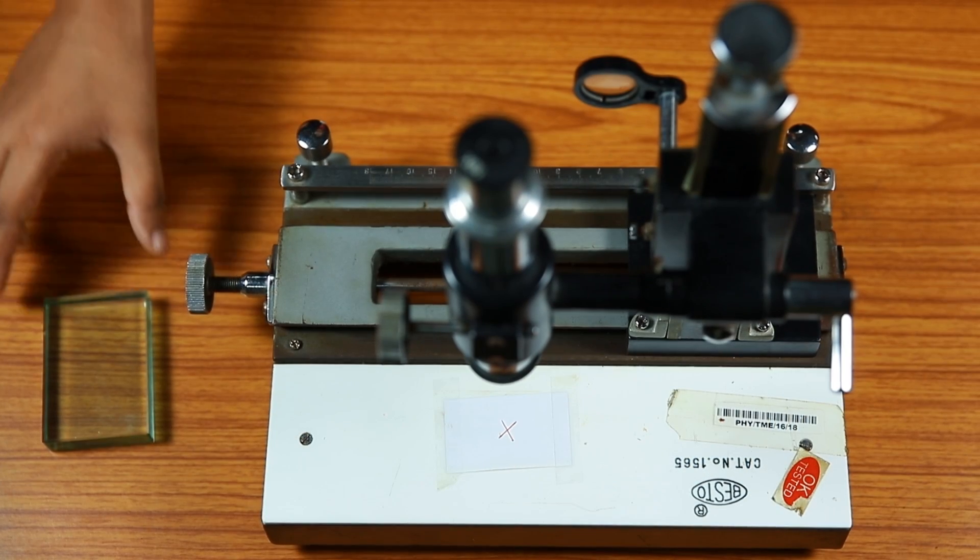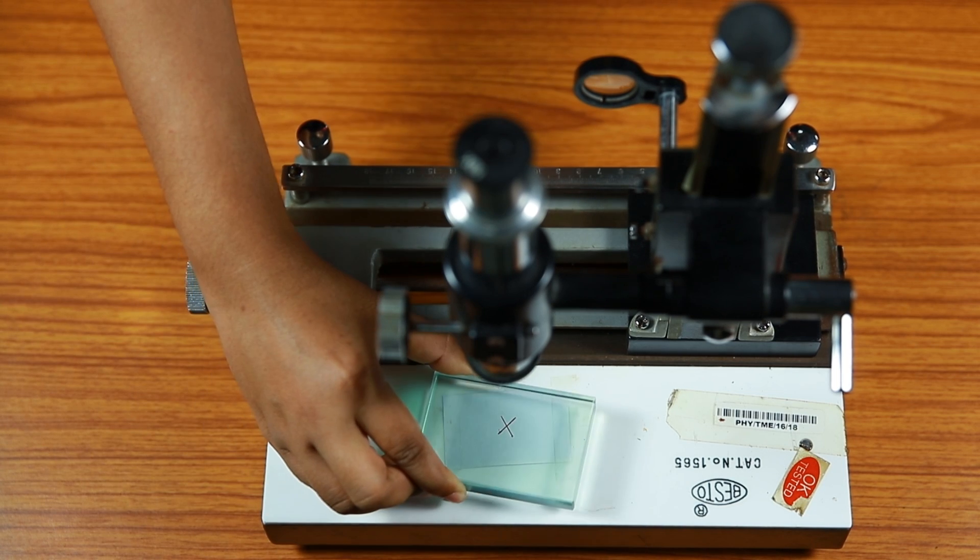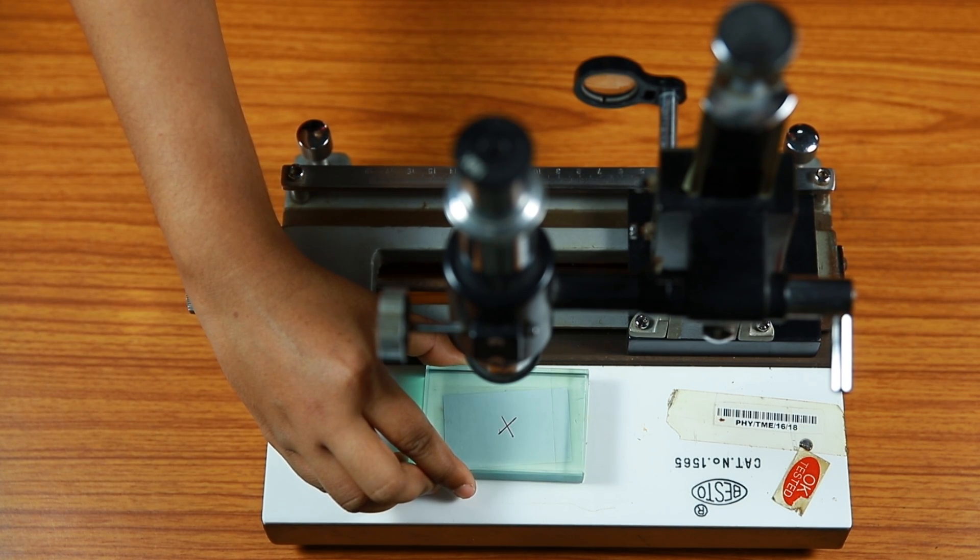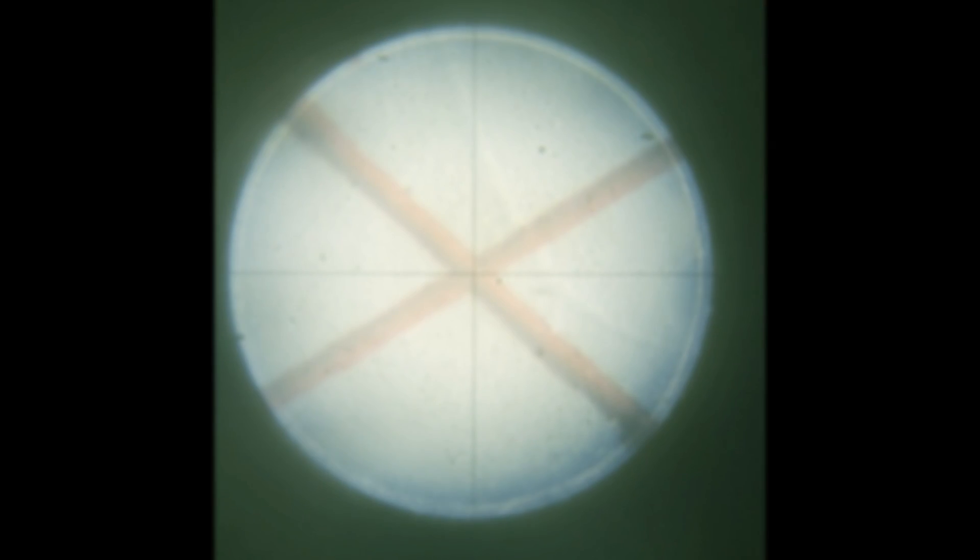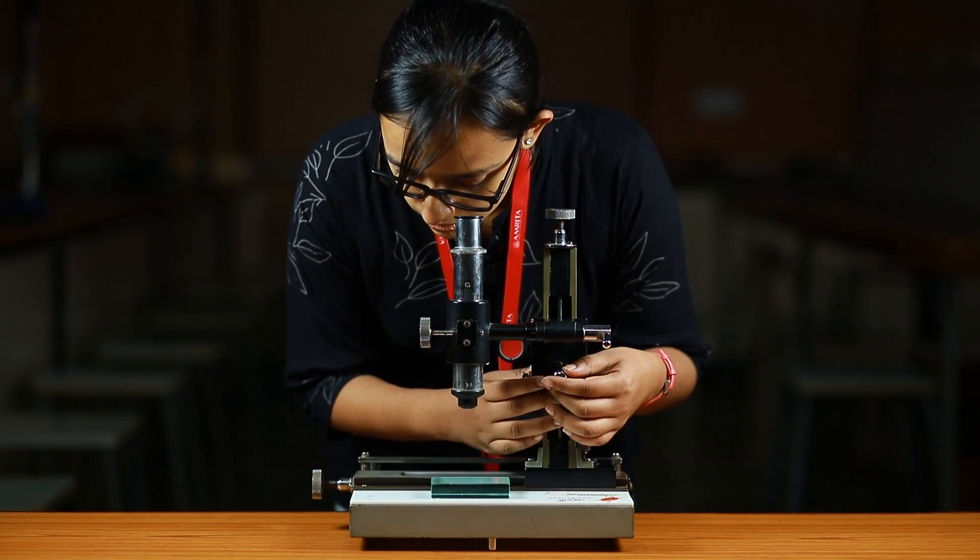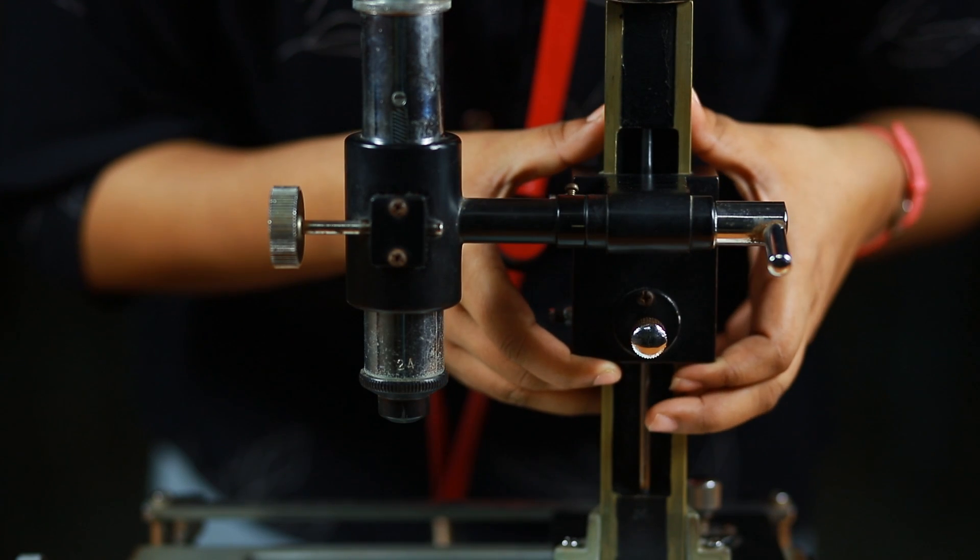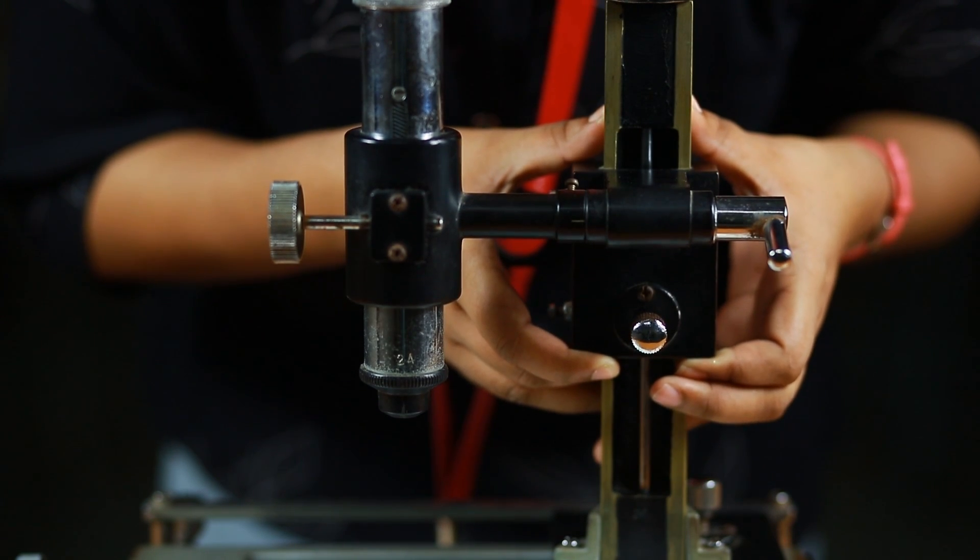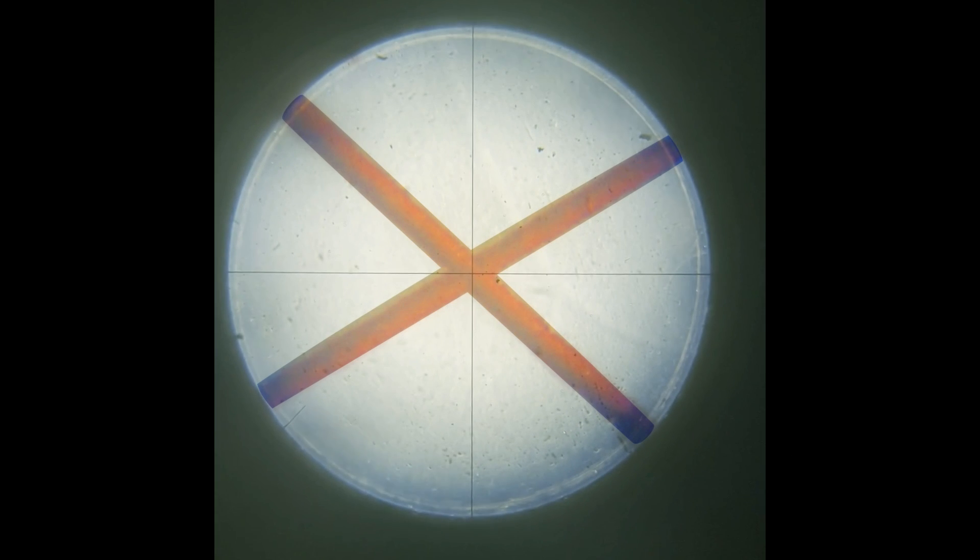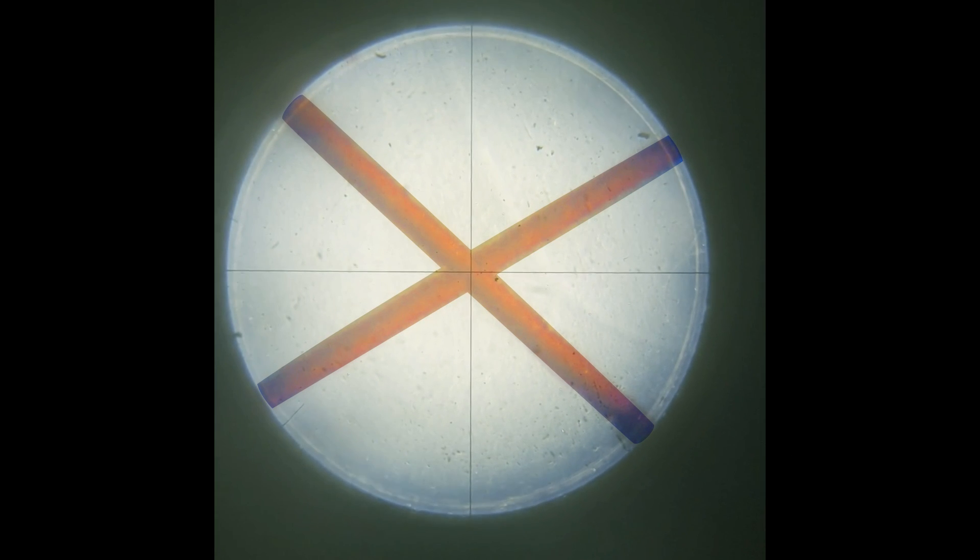Next, place the glass slab over the mark on the sheet of paper. The microscope will now be out of focus. Without disturbing the microscope setup, loosen the screw for vertical adjustment and gently raise the entire lens system upward until mark on the paper seen through the slab is sharp and clear.